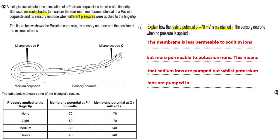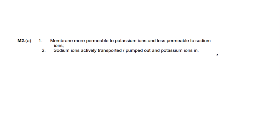You don't need to go into that much detail as this is only a two-mark question. Looking at the mark scheme: mark point one says the membrane is more permeable to potassium ions and less permeable to sodium ions — we covered that. Mark point two says sodium ions are actively transported or pumped out and potassium ions are pumped in — we covered that too. So we would get both marks for this question.